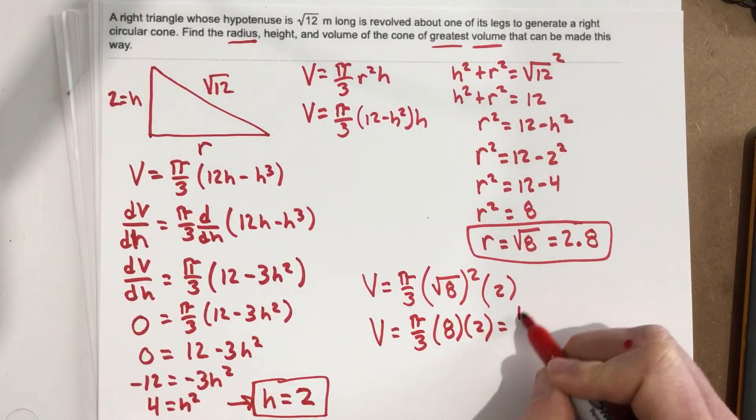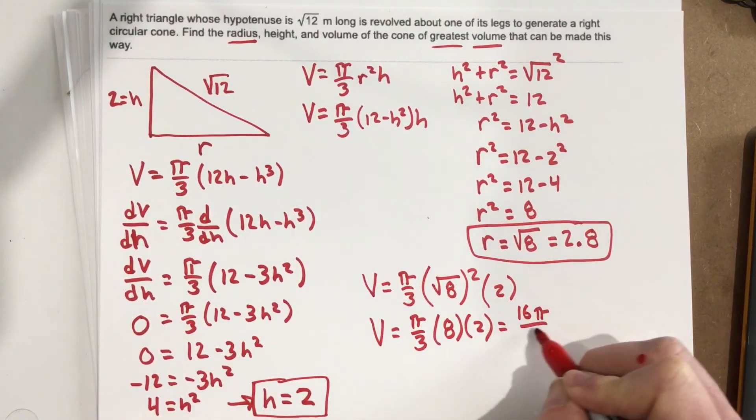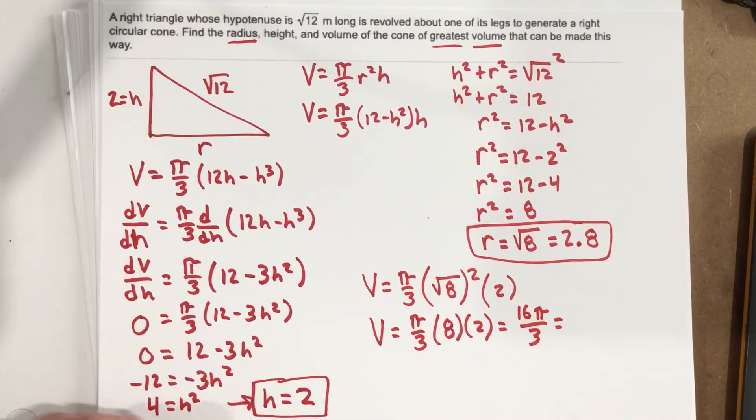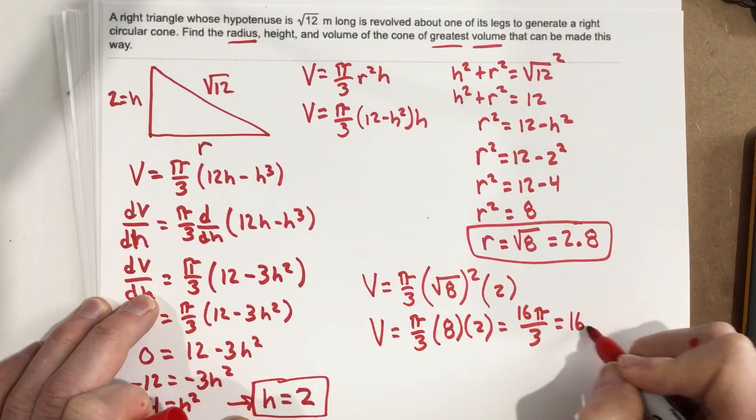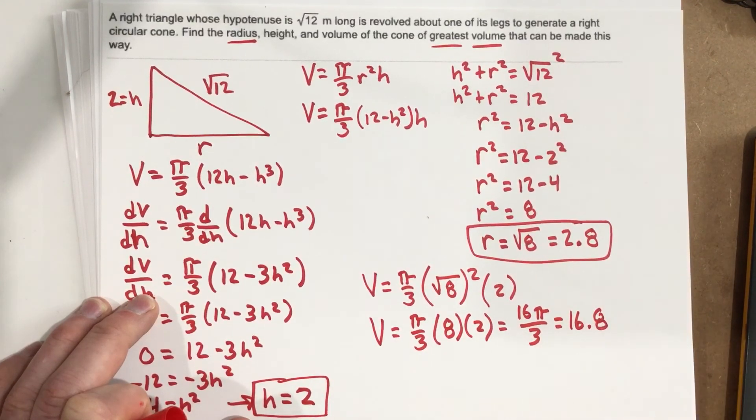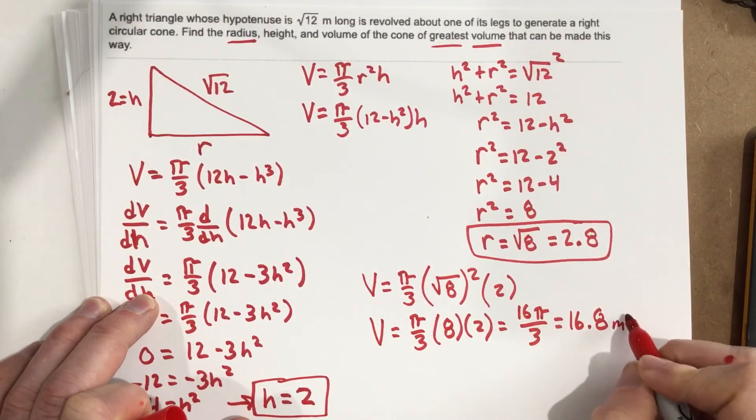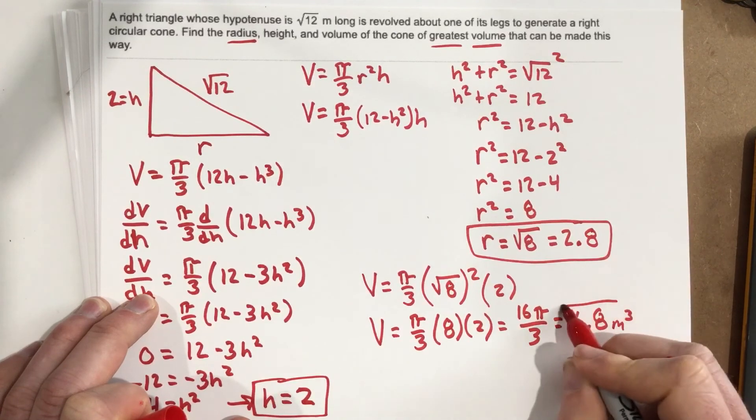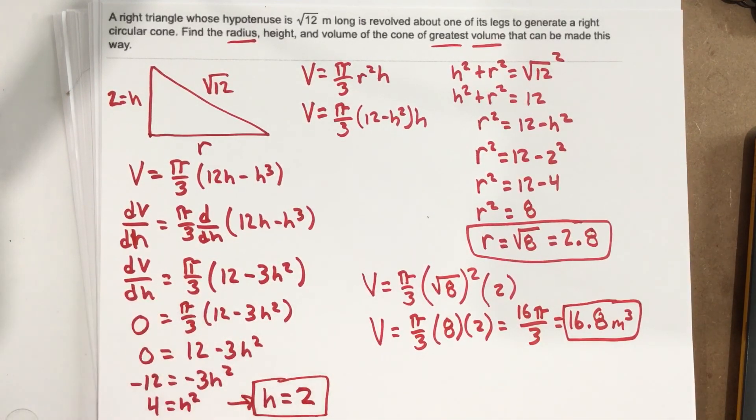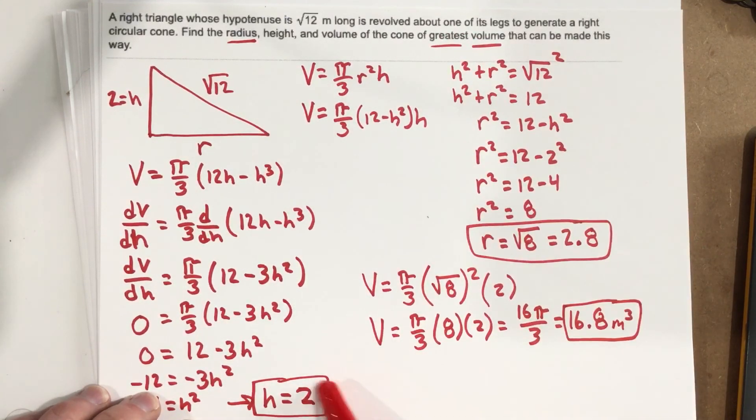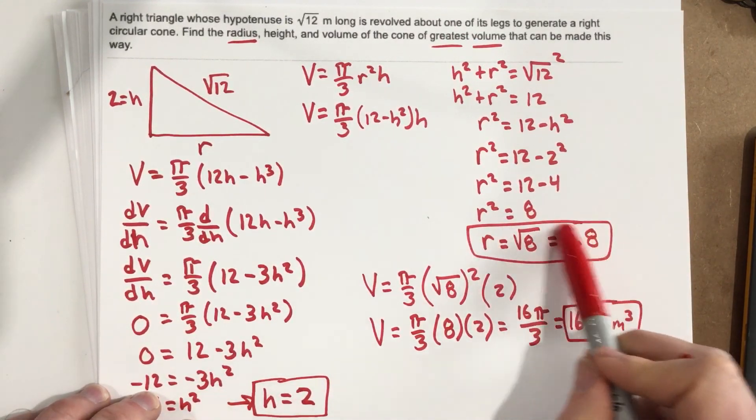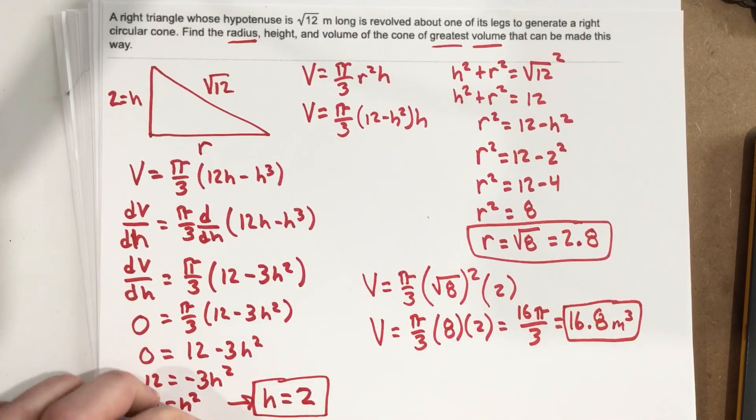So we end up with 16π/3. And 16π divided by 3—they want us to round to one decimal place—is 16.8, and that would be the volume in meters cubed. And that's the greatest volume—this is the height and the radius that gives us that greatest volume.